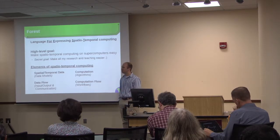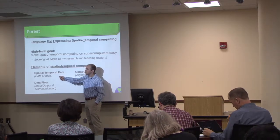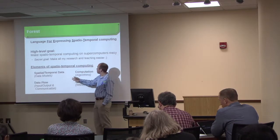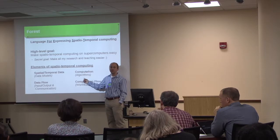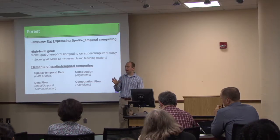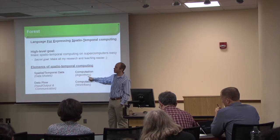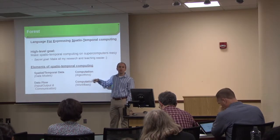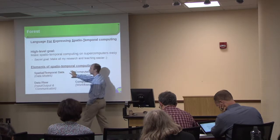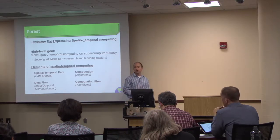Four elements of spatiotemporal computing. The first is the spatial-temporal data itself — in computer science and GIS we call these data models. Decades and decades of research go into how to actually represent spatial data. Second is computation — computer scientists call these algorithms, decades of research into how to effectively write code and do the mathematics to go through all this data. These are our GIS methods, spatial statistics — all written as algorithms so the computer can understand what we do. This is where most of the research has occurred. I think what's missing are actually the bottom two elements, which is where I focus most of my research.